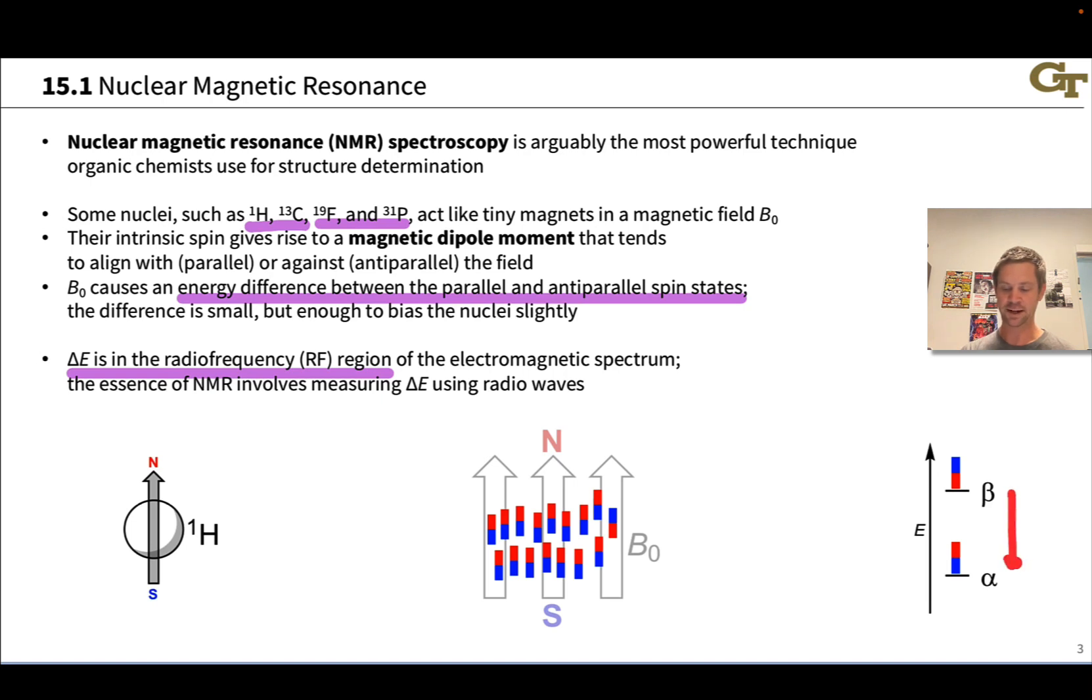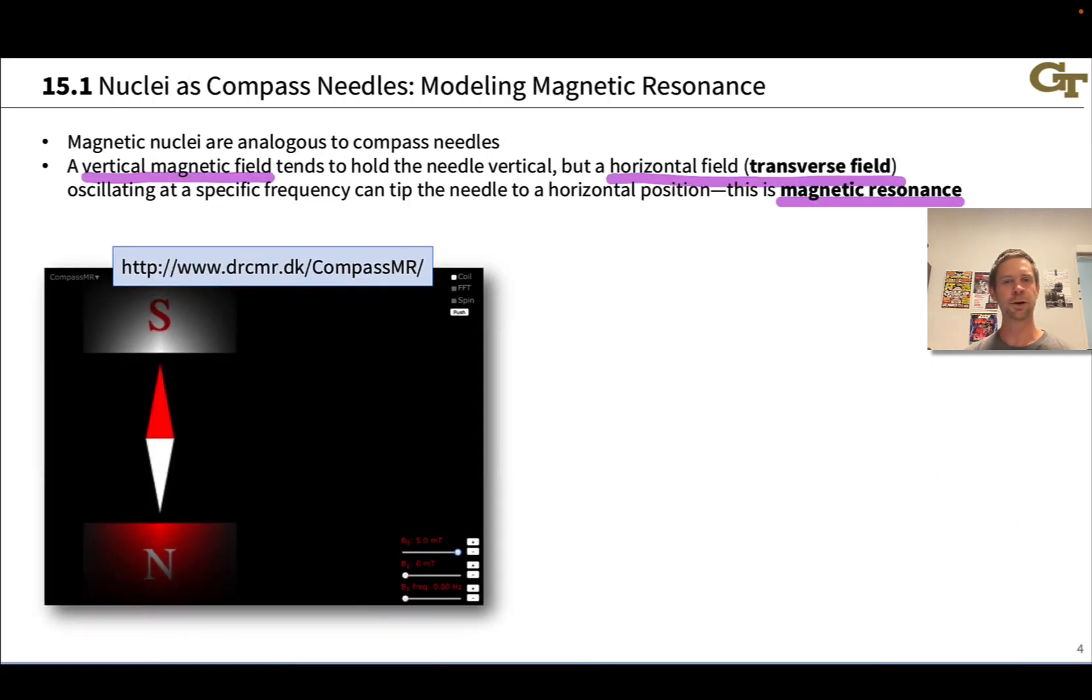We're going to use this term precession frequency to refer to the natural oscillating frequency, and that's associated with this energy gap. There's an energy gap between the alpha and beta spin states that's associated with a ΔE, and that ΔE is associated with a frequency ν via the equation ΔE = hν. That frequency is the precession frequency of the nucleus, and it's also the frequency of the radio wave light that causes an excitation from the alpha to the beta state, and it's the frequency that we measure in the NMR experiment.